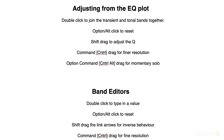Let's review some of the shortcuts that'll really help speed up your workflow. When working in the EQ plot, you can double-click either the transient or the tonal band to join it with the other. Option — or Alt on Windows — click to reset a band. Use Shift to adjust the width of a band right in the EQ plot. Command — that's Control on Windows — drag for finer resolution. Option-Command-click, or Control-Alt-click while dragging, gives you a momentary solo, which is really useful.